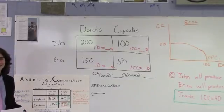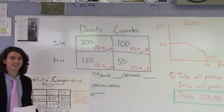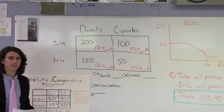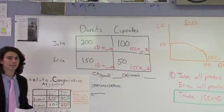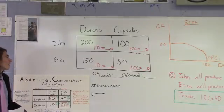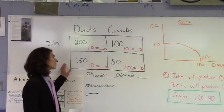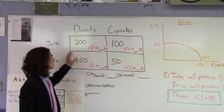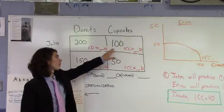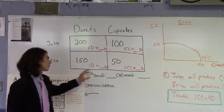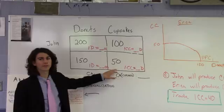Okay, so John can produce more, so he has the absolute advantage in that. Could you just mention, this was not on the test, but could you mention about cupcakes? Does somebody have an absolute advantage in cupcakes? Yeah, as you can see, John also has the absolute advantage in cupcakes, because he can use his resources to produce 100 cupcakes, while Erica can only use her resources to produce 50 cupcakes.